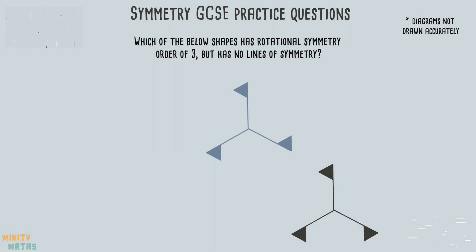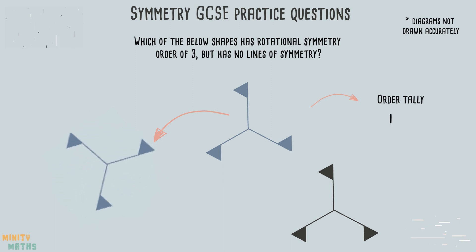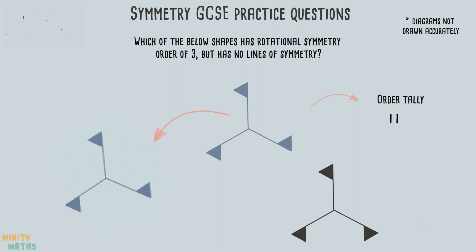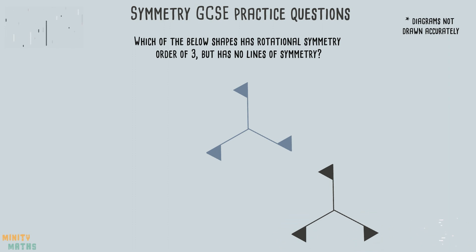Now we are left with these two shapes. Let's test them both to see what order of rotational symmetry they have. We can see that this shape has an order of three. We can also see that the other shape will not have an order of three as these triangles are facing different directions. Therefore the correct shape is this one.